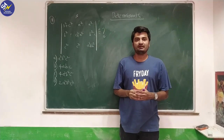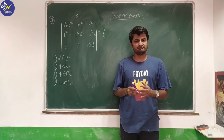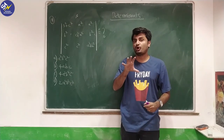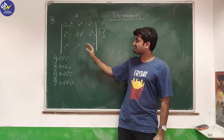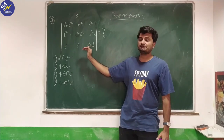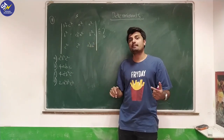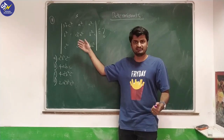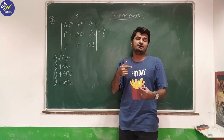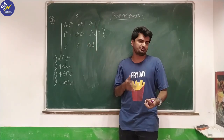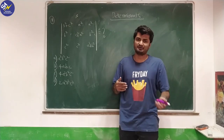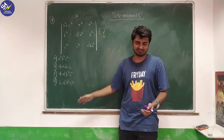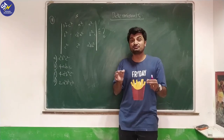In continuation with the basic introduction, we will first talk about determinants. This is a classic question based on determinant properties. In the usual board method you use various properties — subtracting rows and columns, making it into a lower triangular or upper triangular matrix — to get the final answer, but we are not using that approach here.